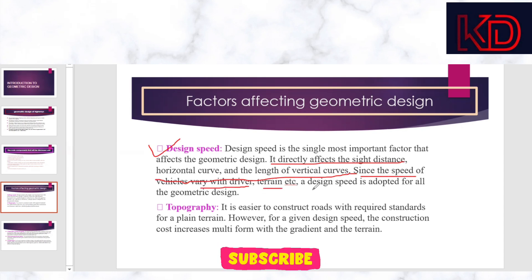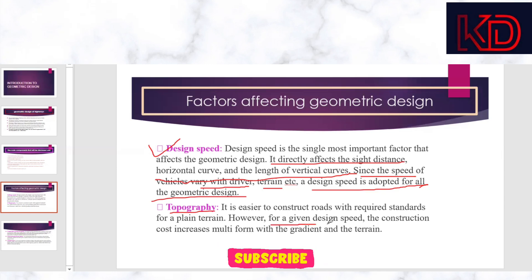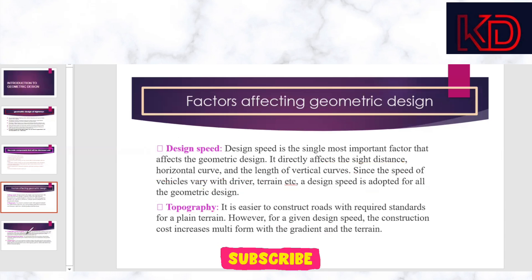Design speed directly affects side distance, horizontal curve, and the length of vertical curves. Since speed varies with the driver and the terrain, design speed is adopted for geometric design. You may have seen boards on national or state highways restricting speed to 30 km/h near sharp turns. Next is topography — it is easier to construct a road on a plain terrain, but if the terrain is sloped, construction becomes difficult and cost increases.